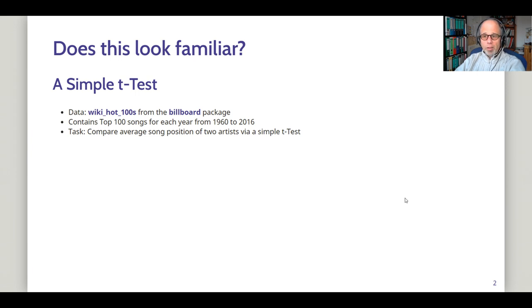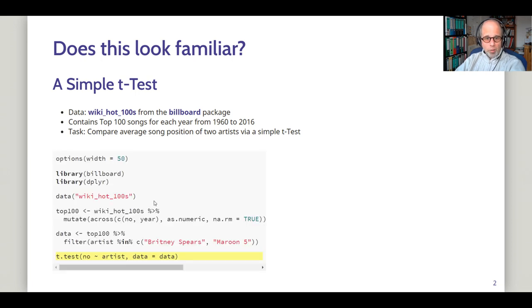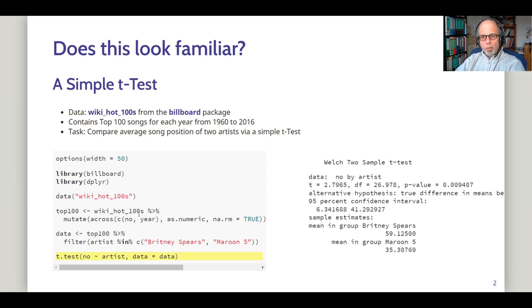So we start right away and simply with a t-test. The data I'm using today is from the billboard package. It contains the top 100 songs for each year from 1960 to 2016. And we'll do a very simple t-test to compare average song positions of two artists. So some data preparation, and I chose Britney Spears and Maroon 5. And then the highlighted line at the bottom of this code on the left-hand side is the base R code for the t-test, the formula interface.